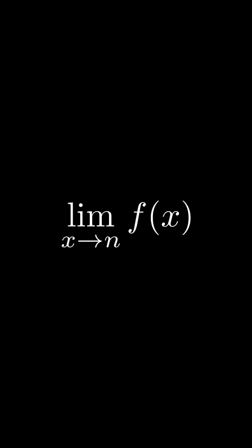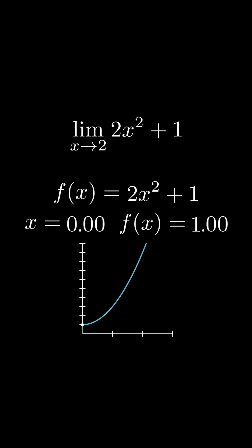Under the limit are two things, our variable x, and the number that x is approaching. Beside the limit is a function of x. To find the value of this expression, you take the function of x, 2x squared plus 1, and set the value of x to be closer and closer to the number x is approaching, 2.